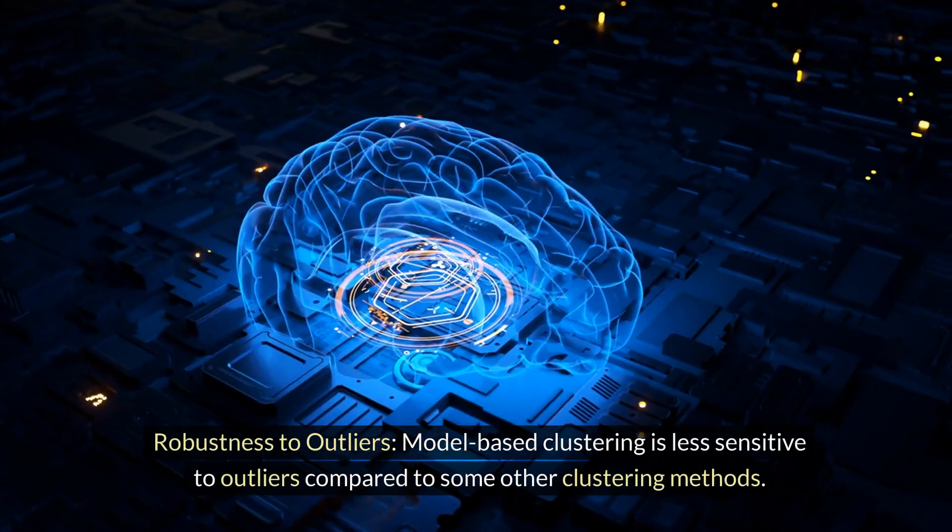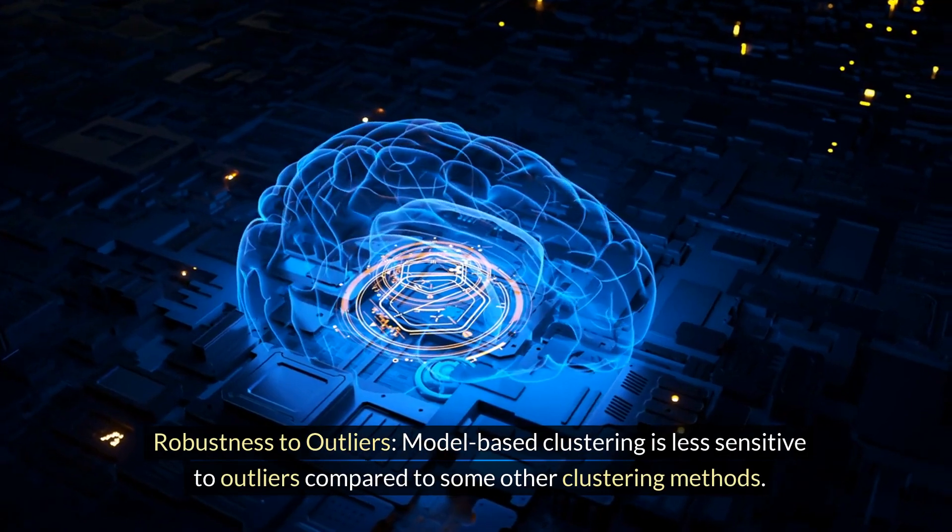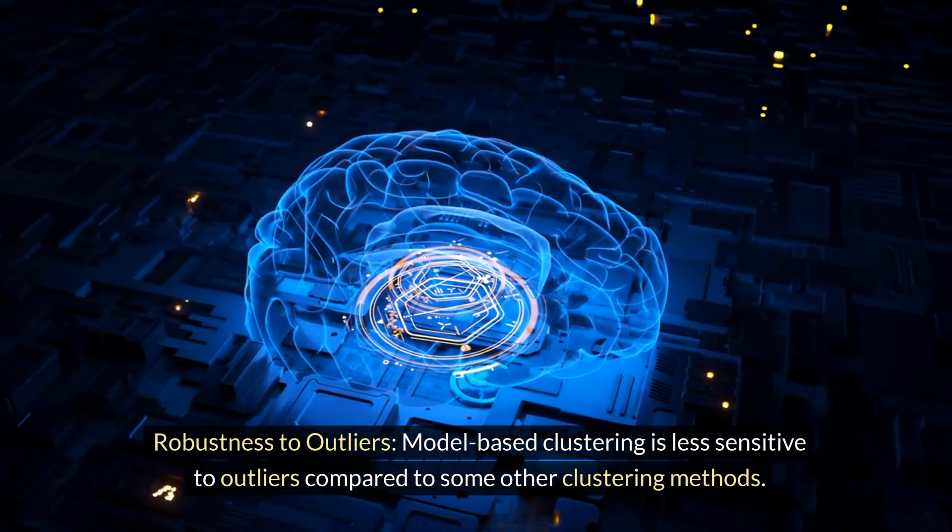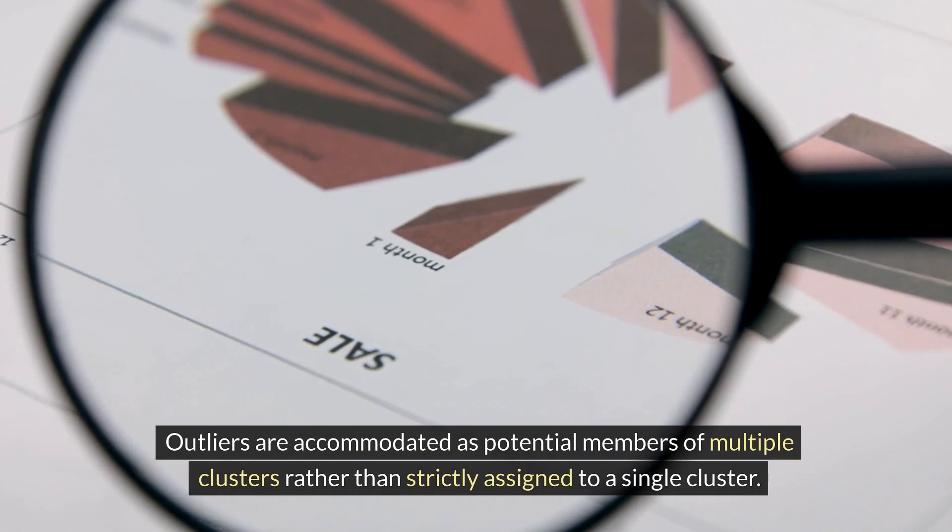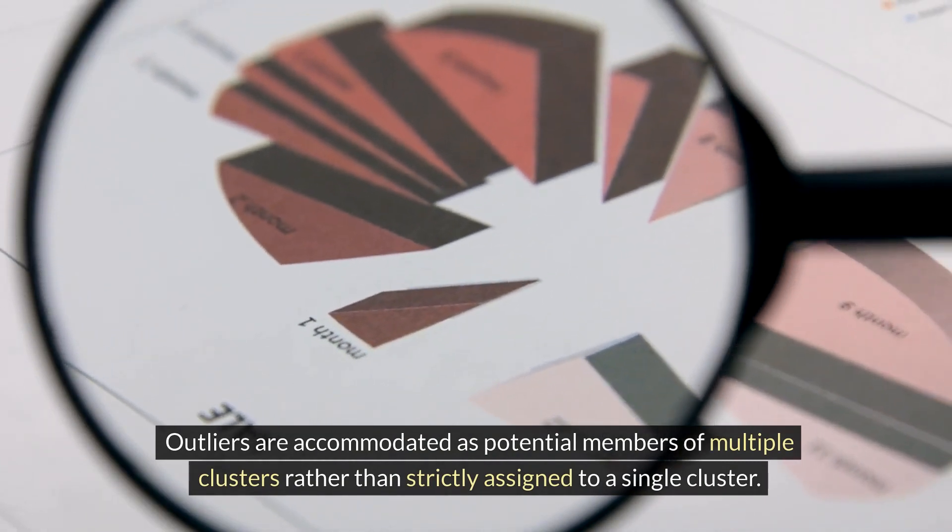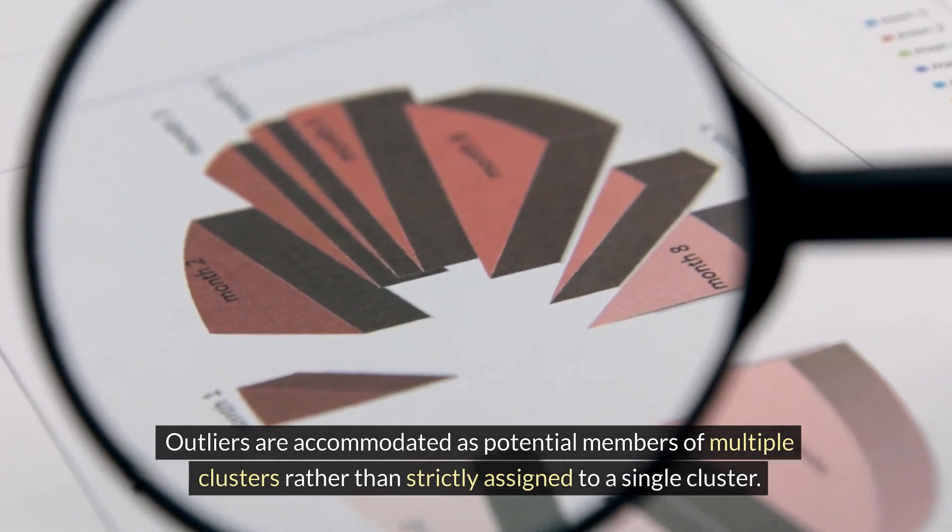Robustness to outliers. Model-based clustering is less sensitive to outliers compared to some other clustering methods. Outliers are accommodated as potential members of multiple clusters rather than strictly assigned to a single cluster.